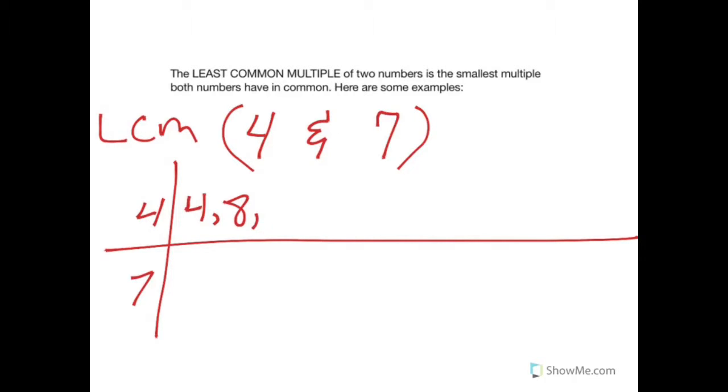And then I count out four. Eight. Twelve. Just skip counting, really. Sixteen. Twenty. Twenty-four. Twenty-eight. I'll stop right there because I know that twenty-eight is a multiple of seven. If I had stopped at twenty, I wouldn't find the least common multiple yet. And I'd have to keep going. I'd have to go to twenty-four to twenty-eight.